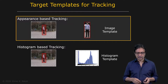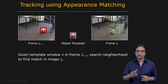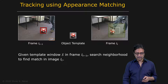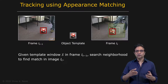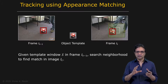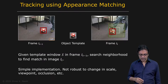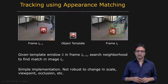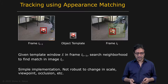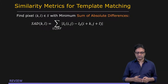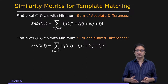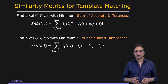Let's take a look at appearance-based tracking, which is image-based tracking. The idea is simple — we've done this before in the context of stereo matching. You define your object of interest, such as the soccer ball with a red window around it, use it as a template, and apply that template within a search window in the next frame. Wherever you get a good match, you declare the new position of the object, assuming the change in appearance between time t-1 and t is very small. This method is not robust to large changes in scale, viewpoint, or occlusion. You can use various metrics: sum of absolute differences, sum of squared differences, or normalized correlation to handle illumination changes.